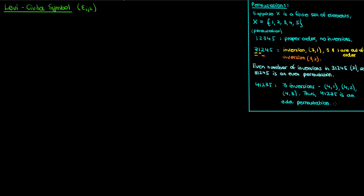So in conclusion, an even permutation is one in which there is an even number of inversions, and an odd permutation is one in which there is an odd number of inversions. Let's use these ideas to now define the Levi-Civita symbol.